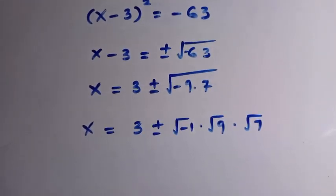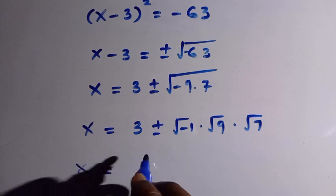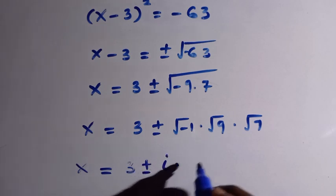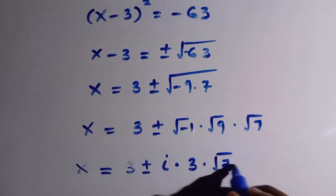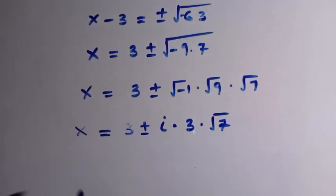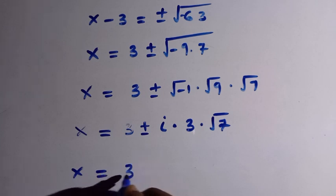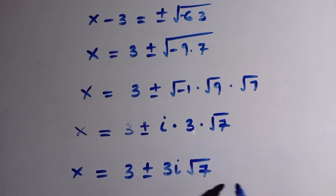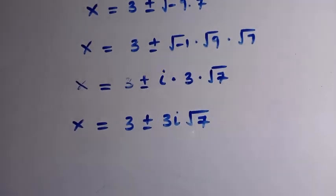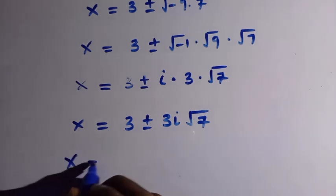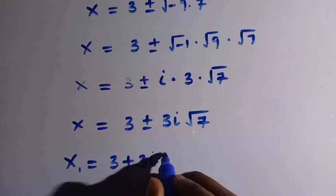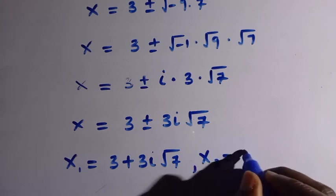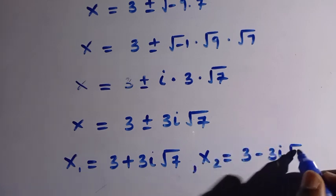So we have x equals 3 plus or minus: square root of minus 1 is i, multiplied by square root of 9, which is 3, multiplied by square root of 7, which we leave as root 7. So we can write this as 3i root 7. It means there are two values of x: x₁ equals 3 plus 3i root 7, and x₂ equals 3 minus 3i root 7.